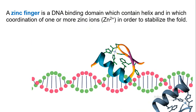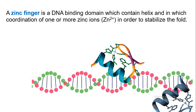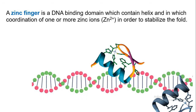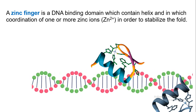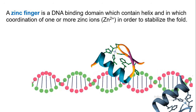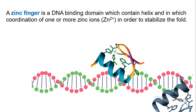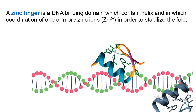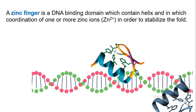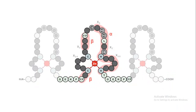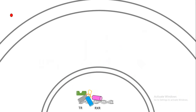Another important motif is the zinc finger motif. As the name suggests, it has one or more zinc ions coordinated by several aromatic groups protruding out of multiple alpha helices and beta turns. These also bind to the major groove of the DNA, and the specific amino acids protruding out of these helices or beta-pleated sheets interact with specific bases of the DNA, ensuring the specificity of binding.